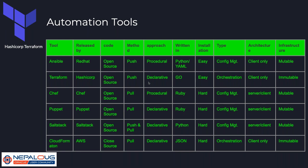Tools like Ansible, Chef, Puppet, and Salt Stack are configuration management tools. CloudFormation is an orchestration tool owned by AWS with closed source — the source code is not released to the public. CloudFormation uses a pull method, requiring software at the cloud end to pull configuration. It uses a declarative approach and configuration is written in JSON. Installation is a bit harder since it is completely owned by AWS.